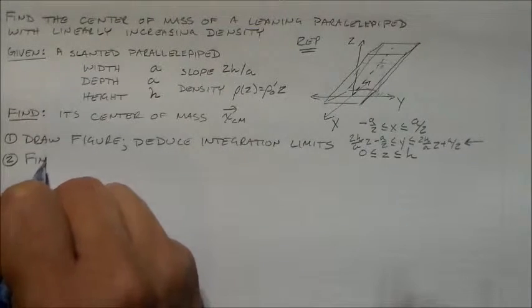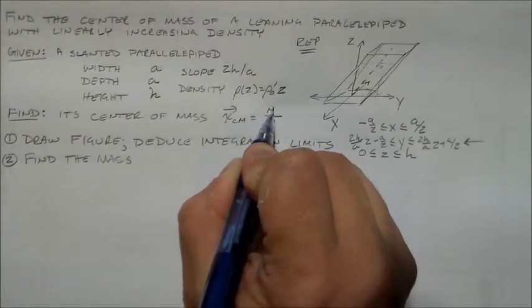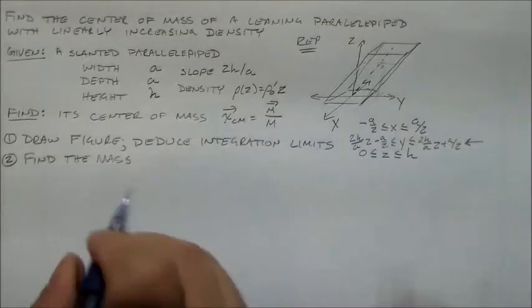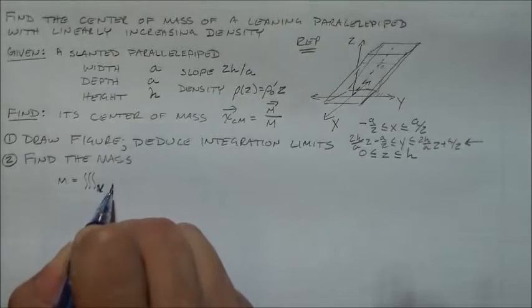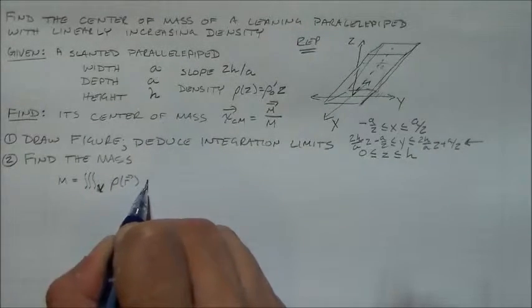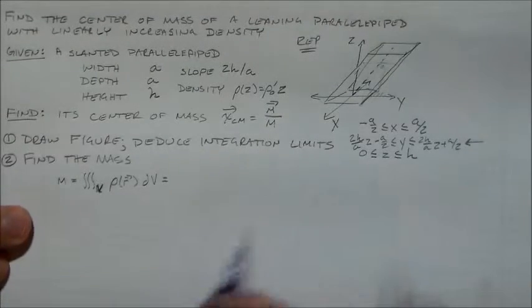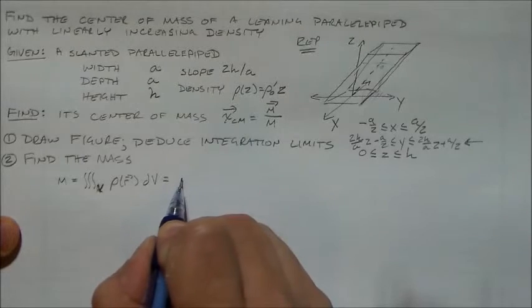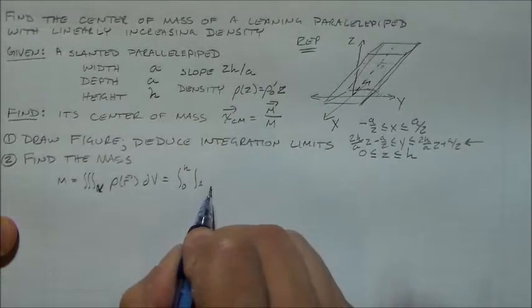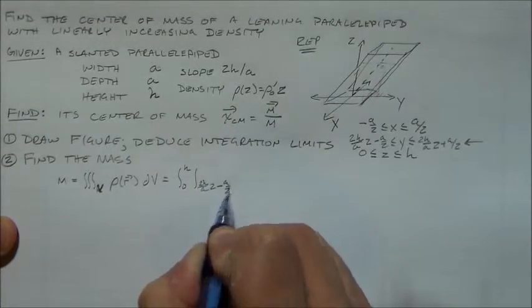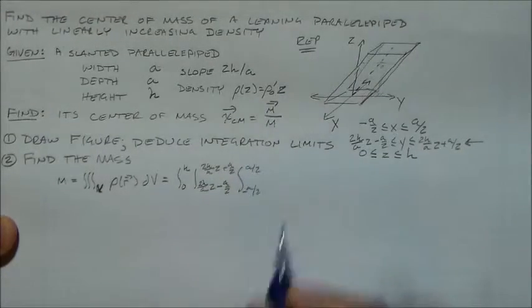So we need to find first the mass. So remember, the center of mass is you take these mass moments and you divide by the mass, right? And the mass is just this integral over the volume of the density, which is a function of position. It's a field. It's a scalar field, dV. So we end with the H's, then we do the stuff that can depend on that.